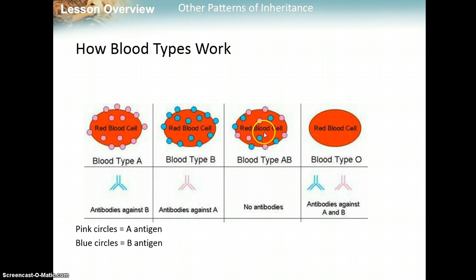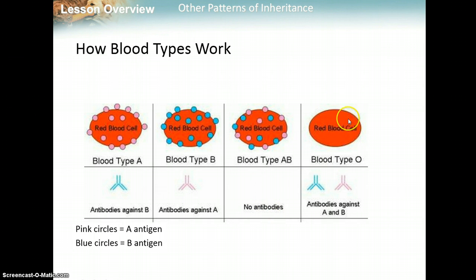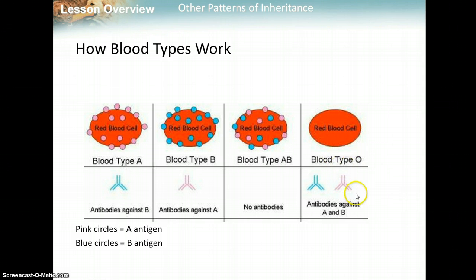A person that's AB has both antigens A and B on their blood, so they don't have any antibodies. They can receive any blood type because they don't have antibodies that would attack foreign blood. Type O people have no antigens on their blood — no ID markers. They produce both antibodies A and B, so blood type O people can only receive blood type O.